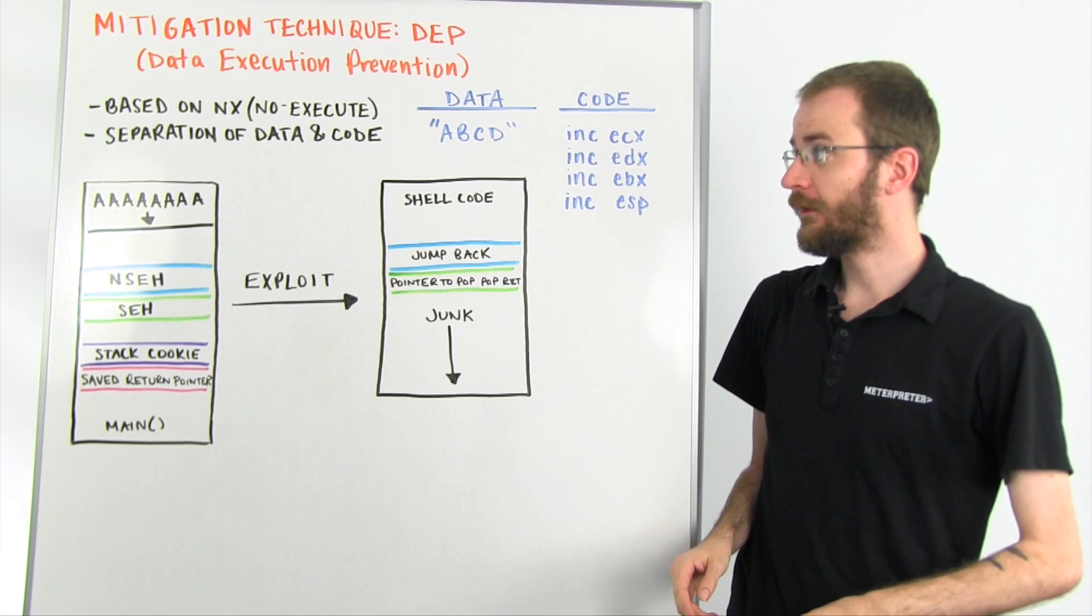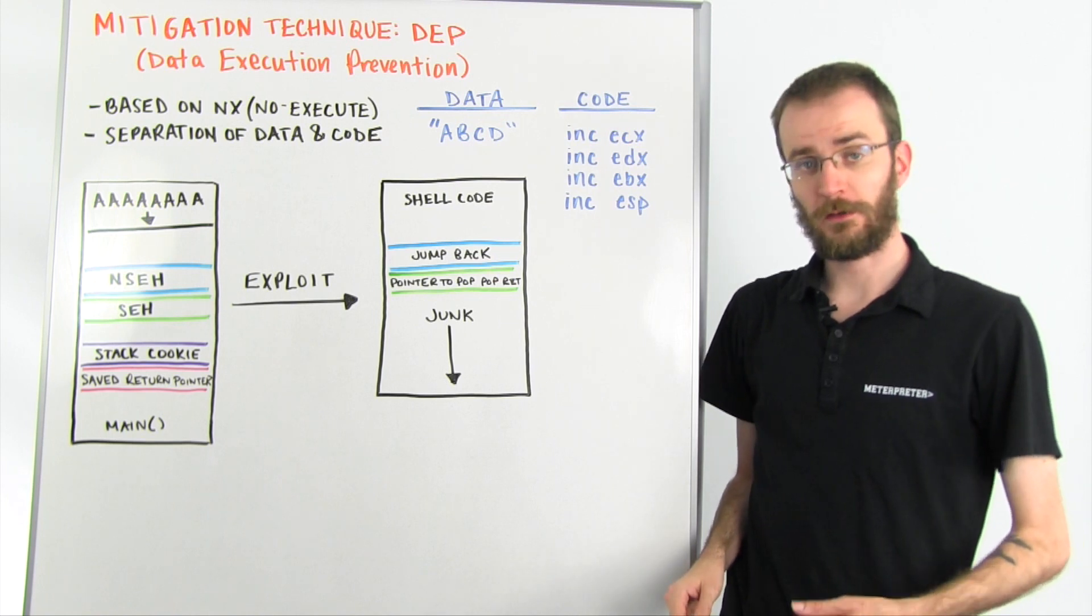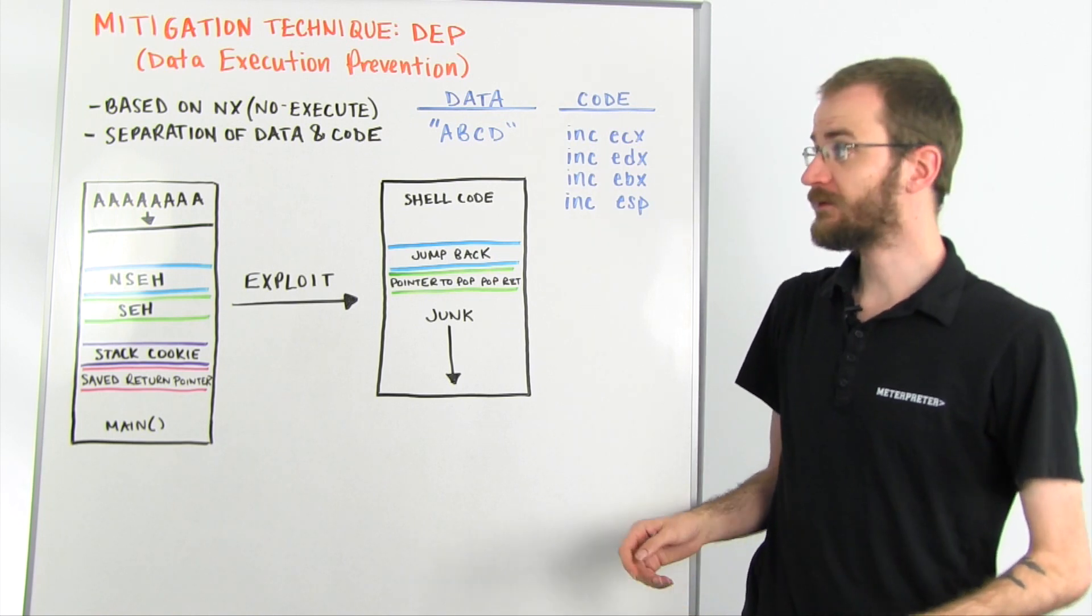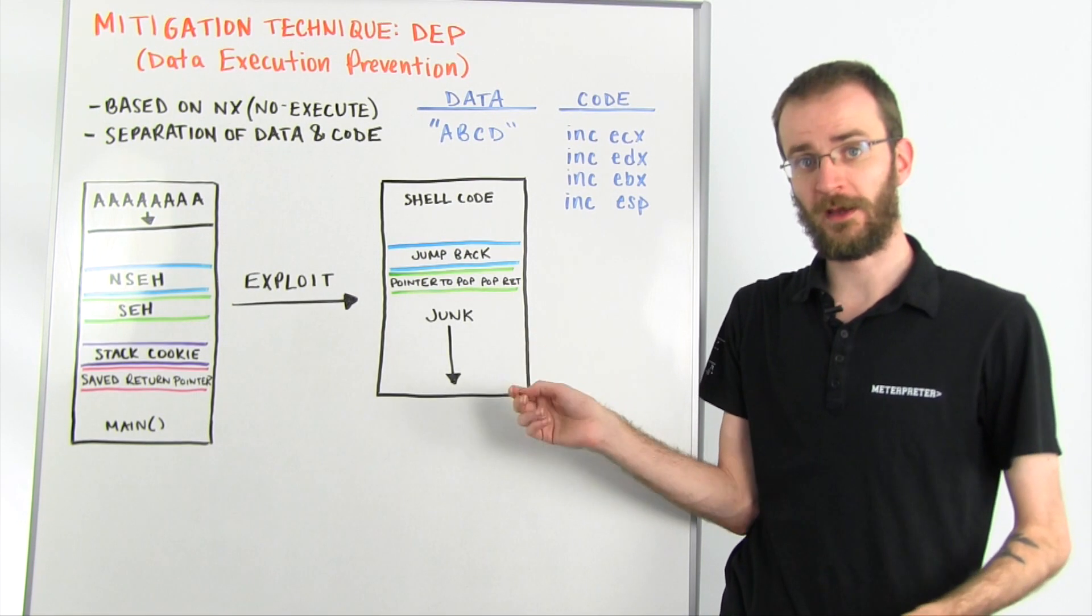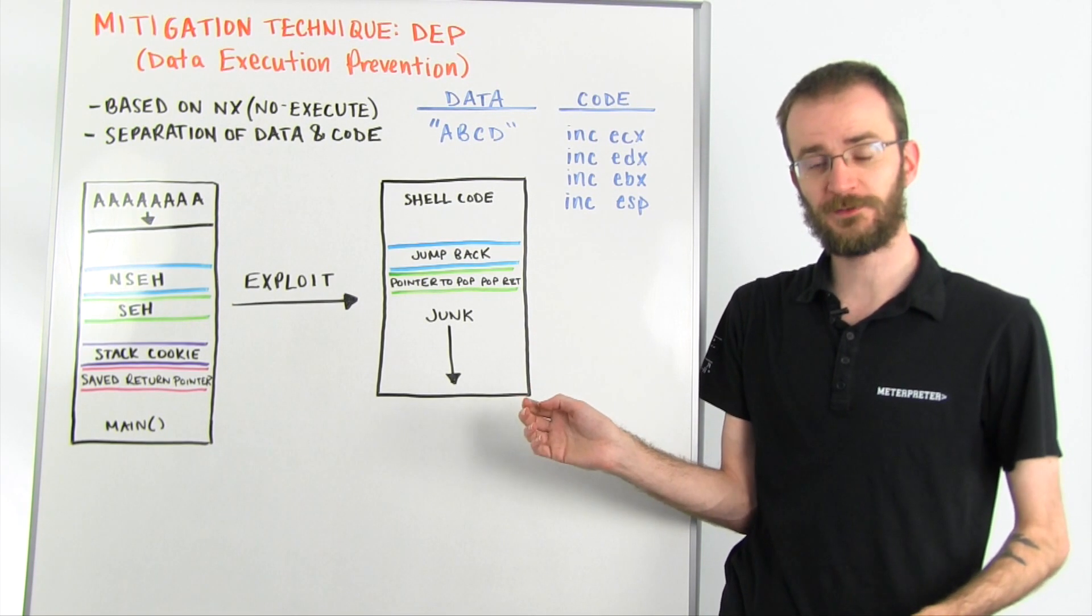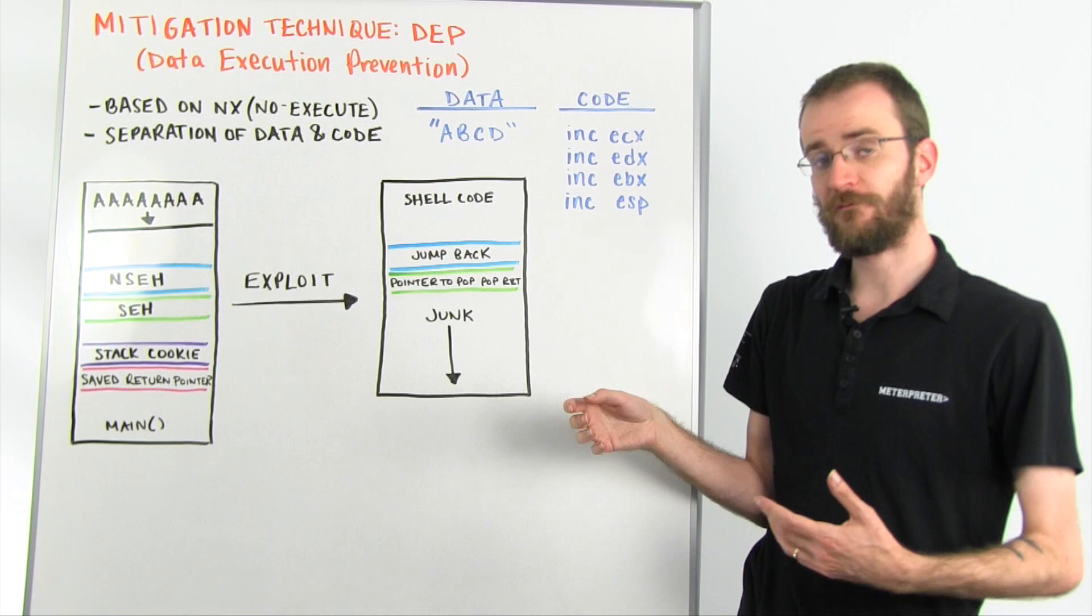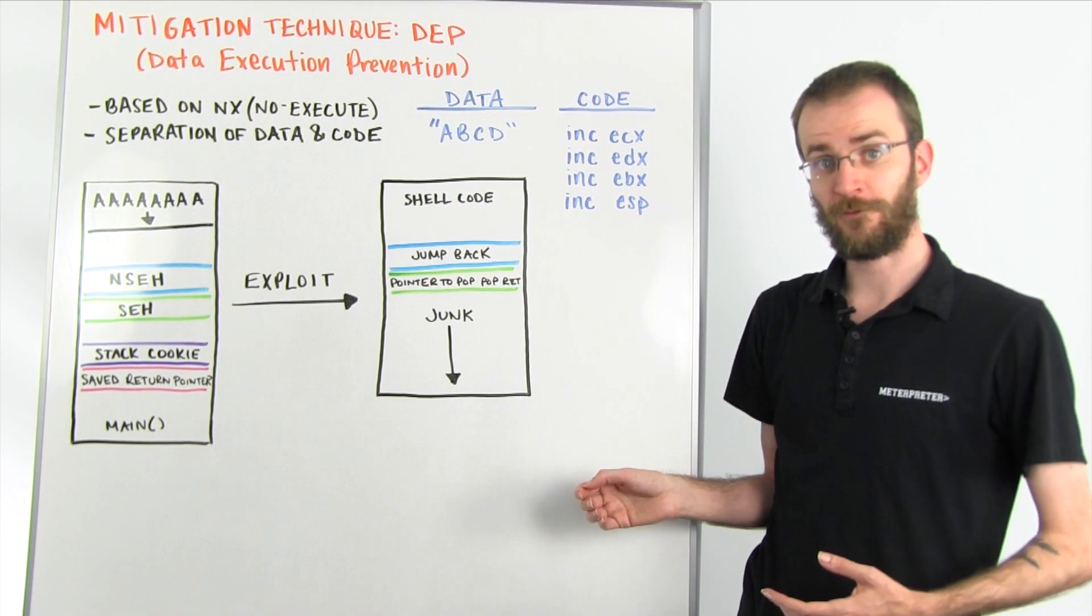This is not a very new mitigation technique. It first was created as something called NX, or No Execute, which was set on processors, and eventually evolved into the technique that we now refer to as DEP.